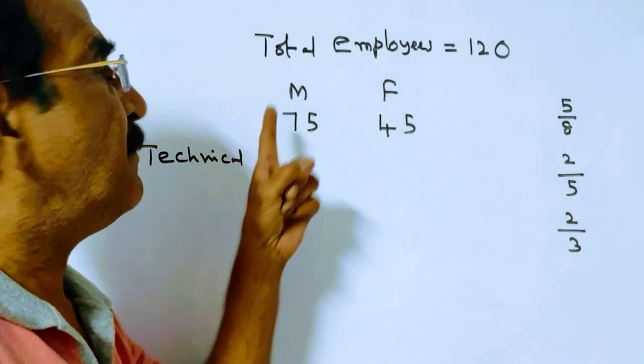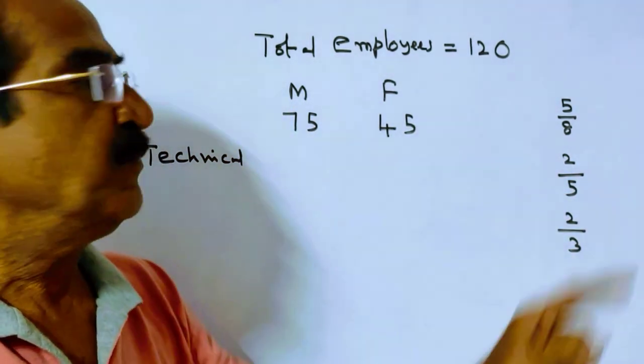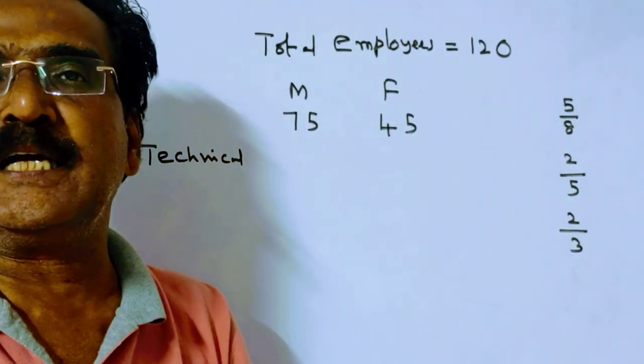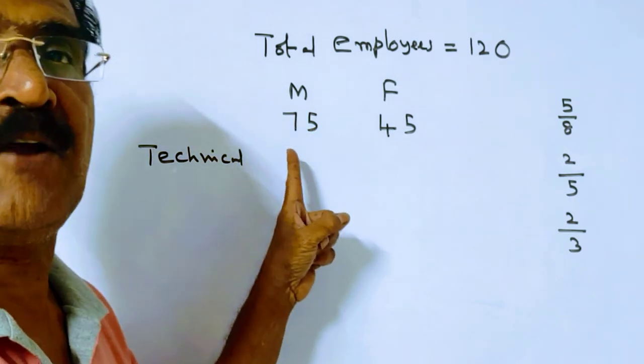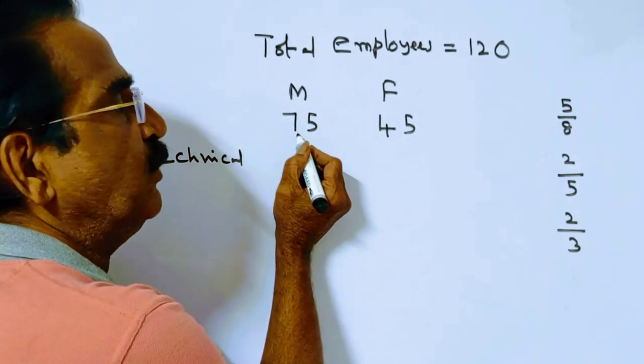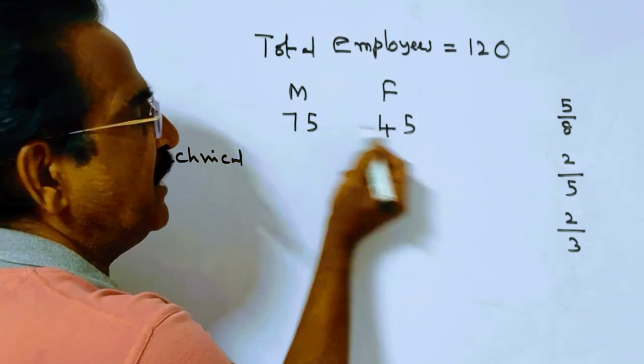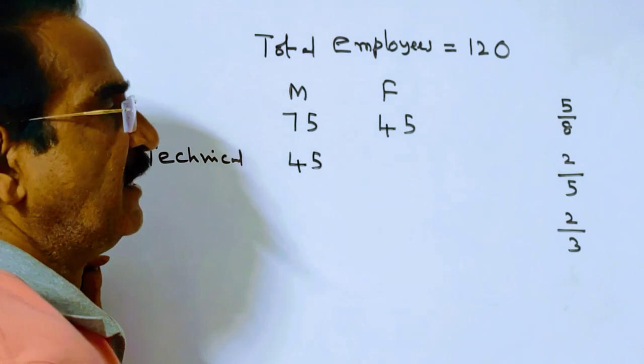Friends, 2 by 5 of the males are non-technical. 2 by 5 non-technical means 1 minus 2 by 5 equals 3 by 5, so 3 by 5 males are technical. So friends, 75 into 3 by 5 equals 45 technical males.